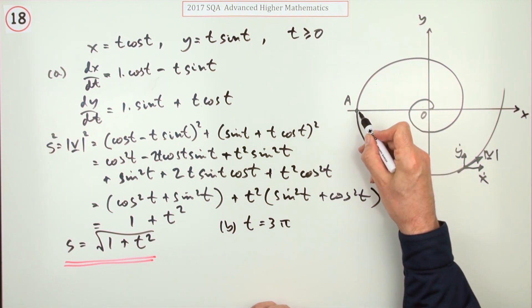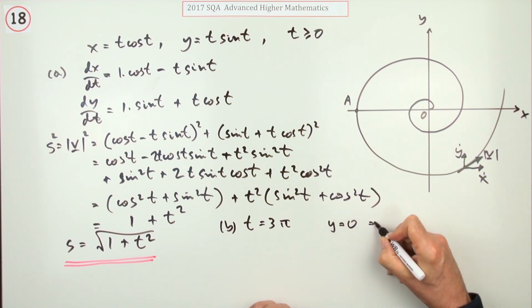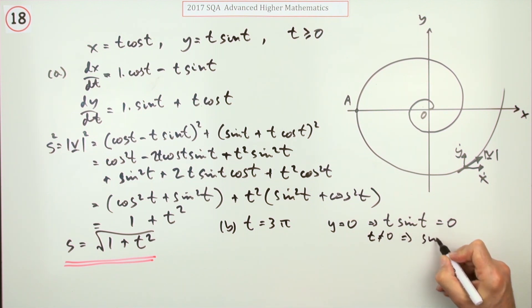Or you could have said, at A, I know that the y coordinate is zero, which means that t sine t should be zero. Now since it started moving, t isn't zero, which means the only thing that can be zero is sine t.